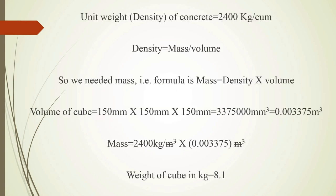The unit weight or density of concrete is equal to 2400 kg per cubic meter. We know density equals mass divided by volume, so we need the form of mass. So mass equals density times volume.